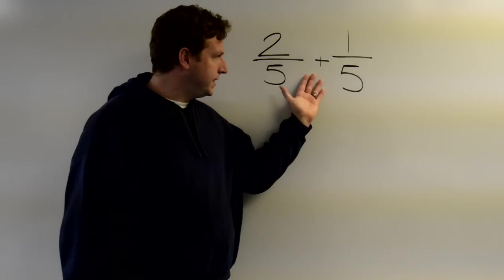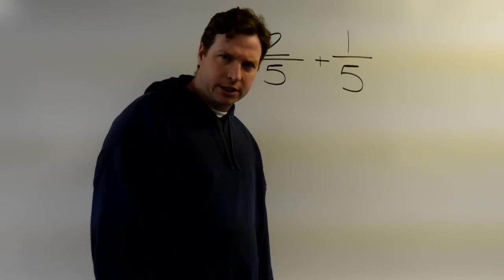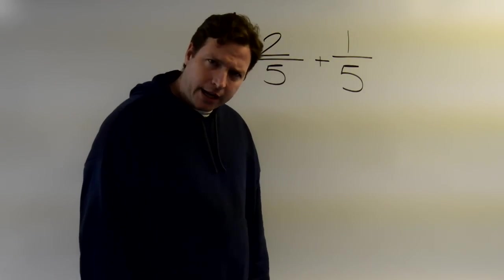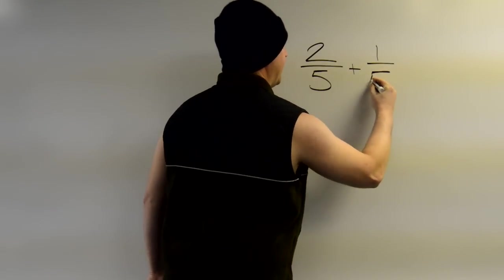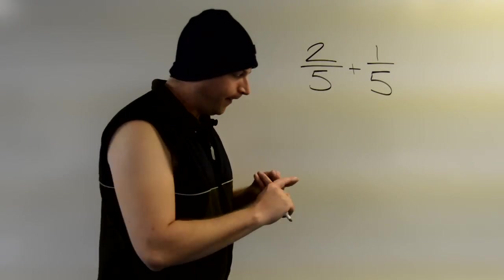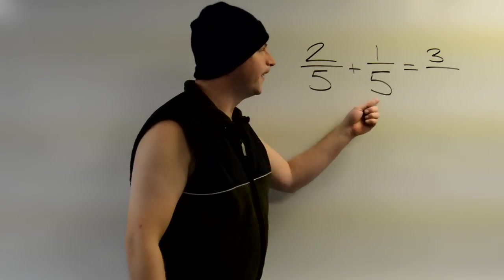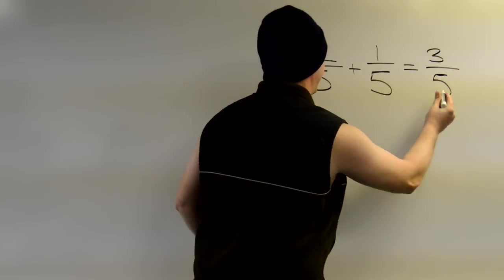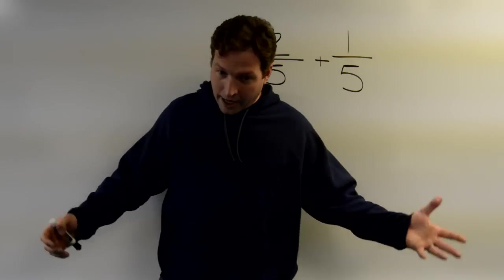So if we want to add two-fifths plus one-fifth, we need to have a rule or some sort of process. Curtis, do you know how to add fractions? I'm Curtis and adding fractions is easy. Two plus one is three, and since this bottom number is the same, I just keep it. Two-fifths plus one-fifth, I reckon it's going to be three-fifths.